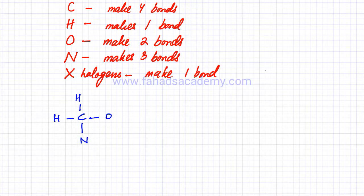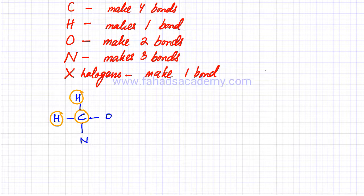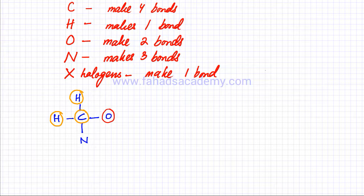Now the total number of bonds for carbon is complete — carbon is making four bonds correctly. Hydrogen needed one bond and it's making one bond, so hydrogen is correctly drawn. But oxygen is not correct — let's circle it. Oxygen was supposed to make a total of two bonds, but right now it's only making one bond.